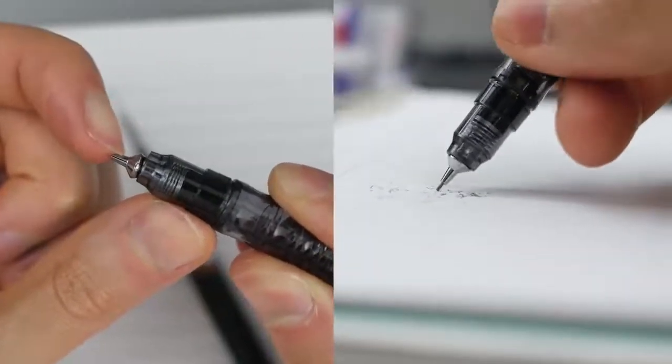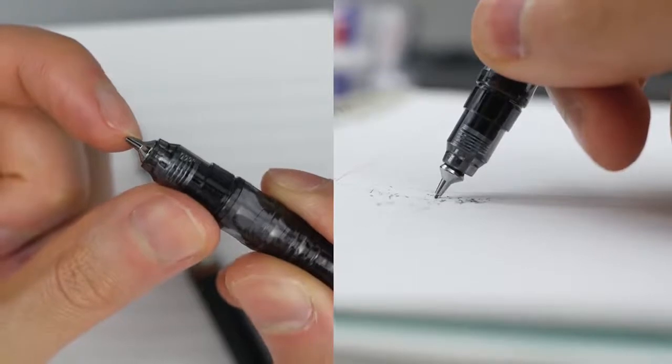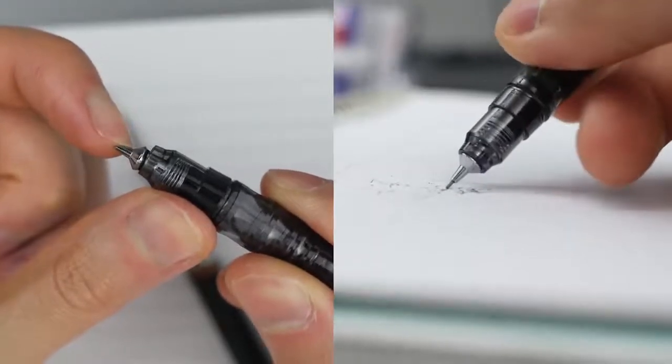So when you apply a perpendicular force to the sleeve the curved shape causes it to extend out and shield the lead from breaking.